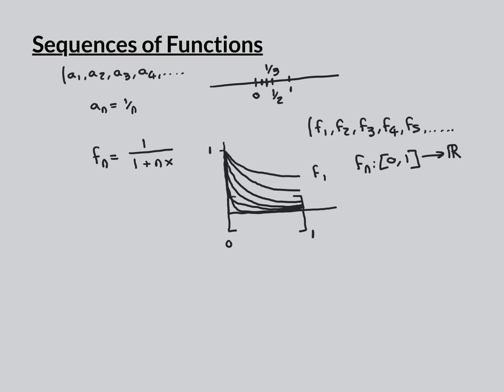Now we've seen an intuitive picture, let's define things formally. A sequence of functions is written just like a sequence of real numbers — f1, f2, f3, f4, f5, etc. — except the terms are functions, not real numbers. They're real-valued functions, and importantly, they must all be over the same domain. In our example, they were all over the domain [0,1].